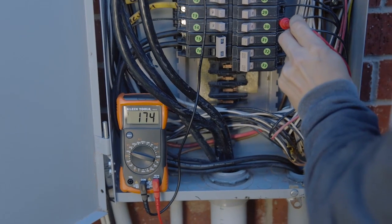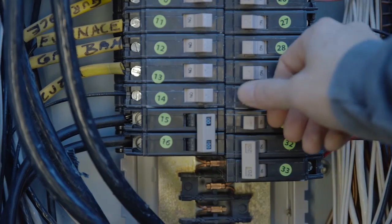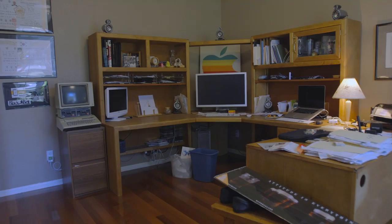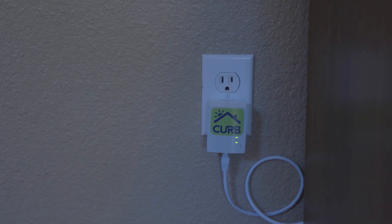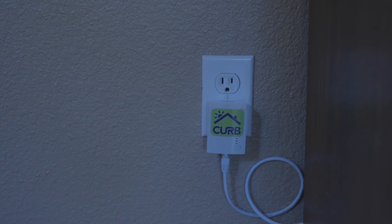Identify which circuit breaker within the panel controls the outlet with the home plug and confirm that the home plug lights go dark when flipping the breaker off. Please make sure the homeowner has first saved their files and shut down their computers.